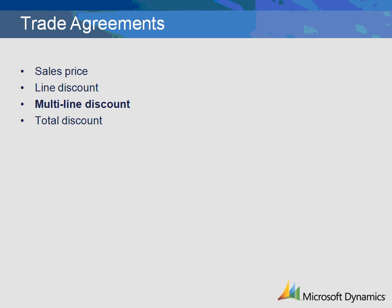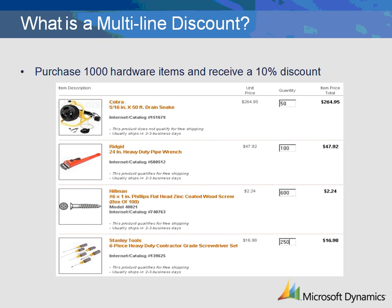There are four types of trade agreements. This demonstration will review how to set up multi-line discount trade agreements. Multi-line discounts are generally used with quantity breaks because they offer discounts based on multiple lines. In this example, purchase 1,000 hardware items to receive a 10% discount. Microsoft Dynamics AX checks all lines of a sales order to see if the criteria are met. If the quantity is greater than or equal to 1,000, then a 10% discount is applied to all hardware items purchased.